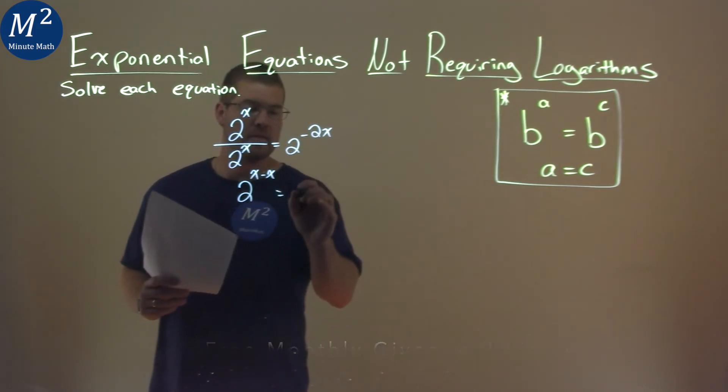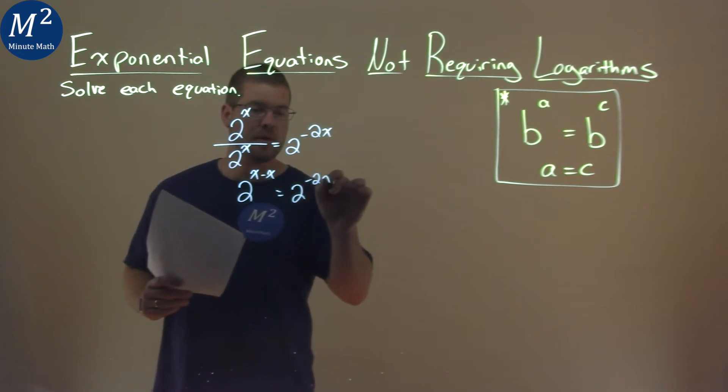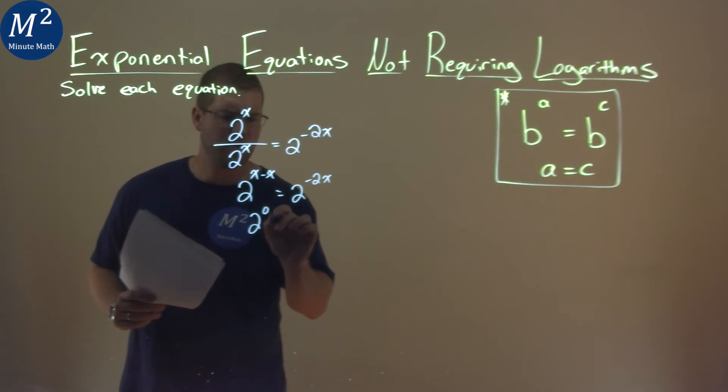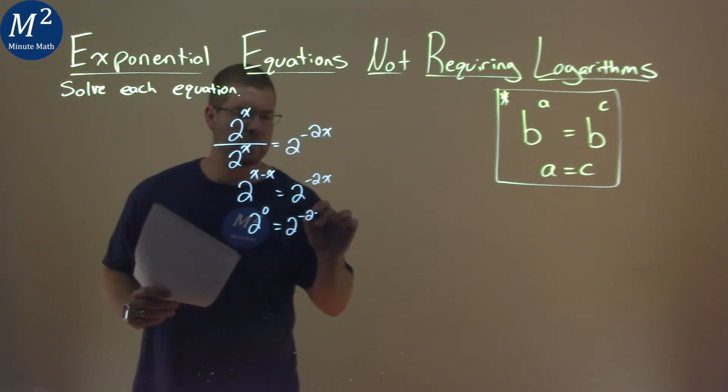The right-hand side stays the same, 2 to the negative 2x power. Well, x minus x is just zero. So we have 2 to the zero power equals 2 to the negative 2x power.